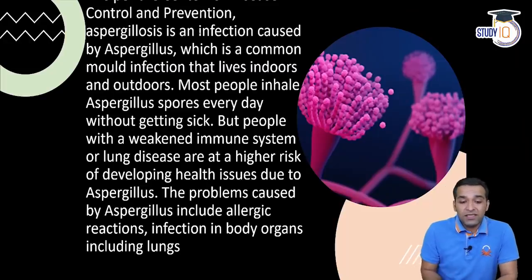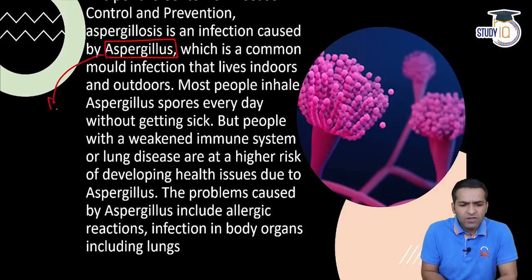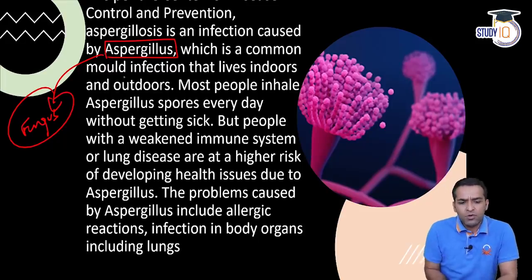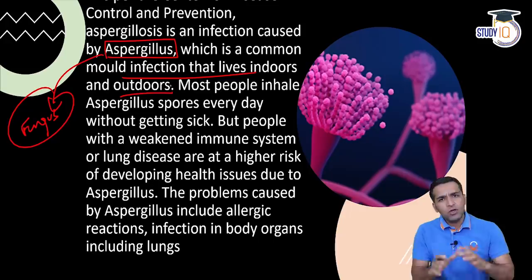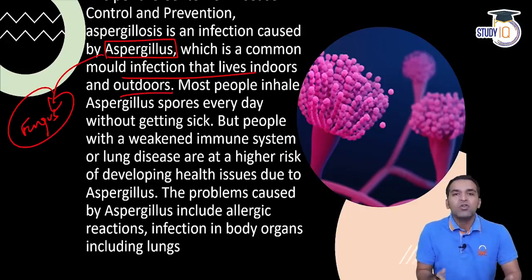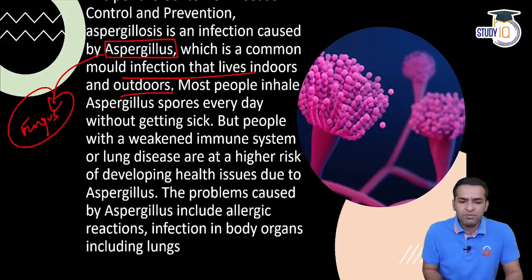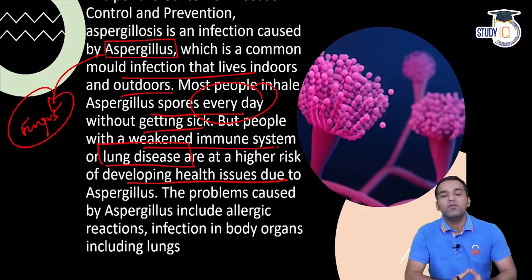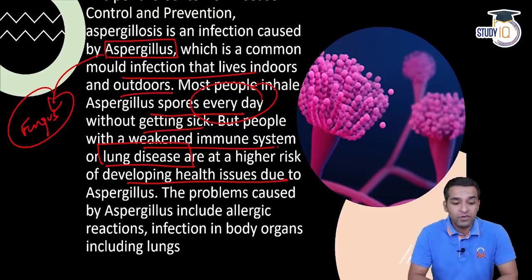Control and prevention of aspergillosis - is an infection caused by the aspergillus - jis se hoti hai, us fungus ka naam hai aspergillus, aur us bimari ka naam hai aspergillosis - which is a common mold infection that lives indoors and outdoors. Ab ye common hai, itna common hai ki basically hum kai baar isko saans mein le lete hain, parantu hamein koi effect nahi karta kyunki immune system theek hai, bimari nahi hai. Most people inhale aspergillus spores everyday without getting sick, but jinka bhi weakened immune system hota hai ya lung disease ka koi khatra hota hai, unko basically isi fungus mold se health issues develop ho jaate hain.